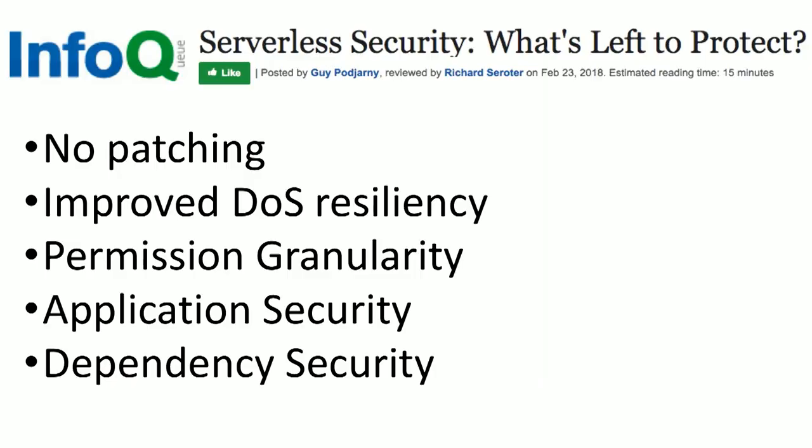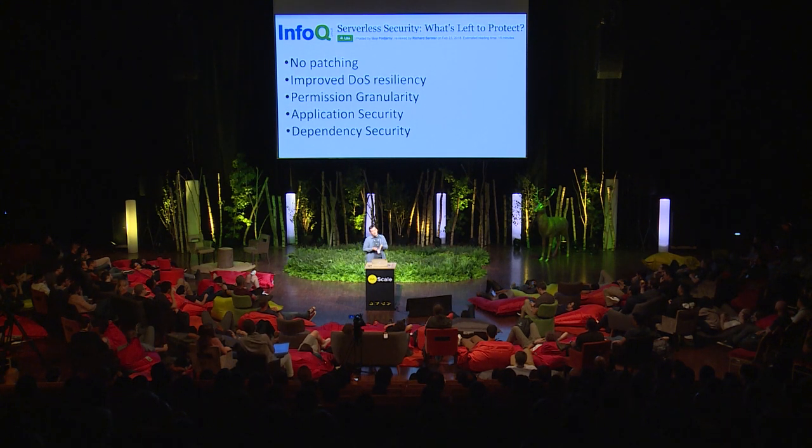When we talk about serverless, there's an important discussion about what is left to protect when you don't have servers anymore. We don't need patching, but can my application have a denial of service attack? What is the role of the function versus the role of the provider — something shared? Who's going to take care of not only application security, but all the dependencies, libraries, and frameworks, and how to make this safe? Many customers are turning to machine learning for that.